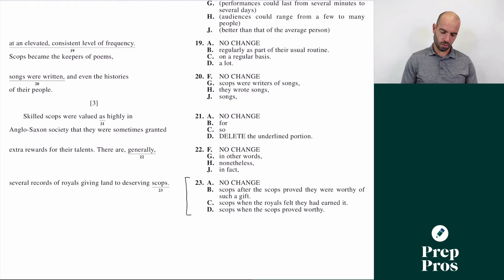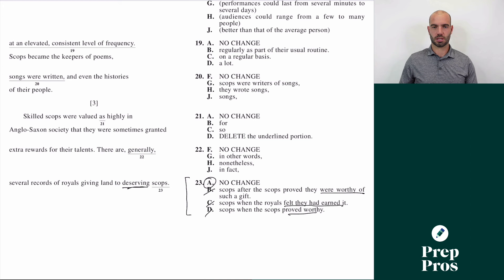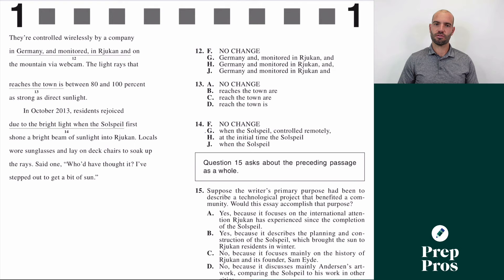The reason why is the sentence says "there are generally several records of royals giving land to deserving scops" — it already says that they're deserving. So saying "they proved worthy," "they felt they had earned it," or "when they proved worthy" — that's all redundant, saying the exact same thing. Almost always the shortest, simplest answer is correct on the ACT. The most common type of comma question you're going to see on the ACT is what's called unnecessary information commas.